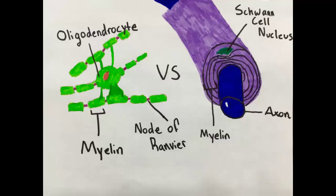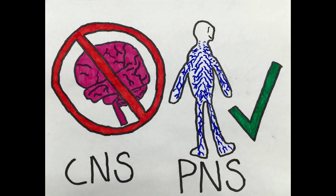Oligodendrocytes and Schwann cells are very similar in function — they both serve to myelinate the axons of neurons. However, they differ in location and method of myelination. Oligodendrocytes are located only in the central nervous system, while Schwann cells are located in the peripheral nervous system. Additionally, oligodendrocytes are able to myelinate multiple axons at once, whereas Schwann cells are only able to myelinate one at a time.